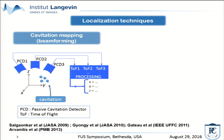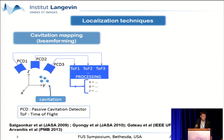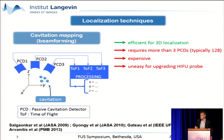The first technique to localize cavitation is cavitation mapping. It has been studied for a long time. Using several PCDs, you can record the acoustic signal from microbubbles, and by extracting the time of flight associated to each channel, you can assess the position of microbubbles in three-dimensional space. This method is really efficient, but it requires typically more than 100 PCDs, so it's really expensive and difficult to integrate into an existing HIFU system.